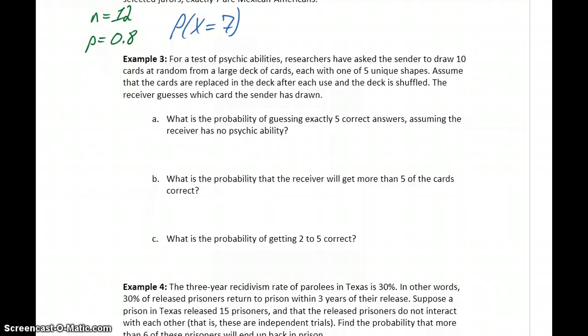In example three, test for psychic abilities, researchers have asked the sender to draw 10 cards at random from a large deck, each with one of five unique shapes. Assuming the cards are replaced in the deck, so in this case the trials are independent, each time we pull a card we put it back in the deck. So here we have 10 trials, and the probability of guessing would be one-fifth, or 0.2.